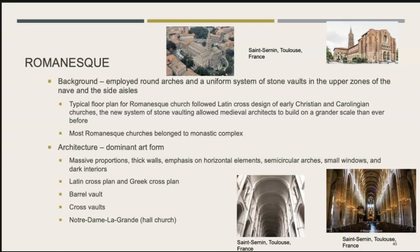The Latin cross differs from the Greek cross in that the Greek cross has equal distances between horizontal and vertical arms, whereas the Latin cross has the crossbar positioned further up. The new system of stone vaulting enabled building even bigger churches. Romanesque architecture was the dominant art form, characterized by massive proportions, very thick walls, an emphasis on horizontal elements, semicircle arches, small windows, dark interiors, and the Latin cross plan — sometimes even a Greek cross plan.